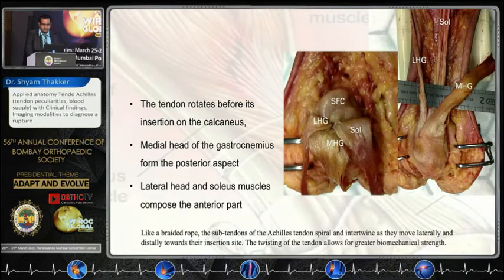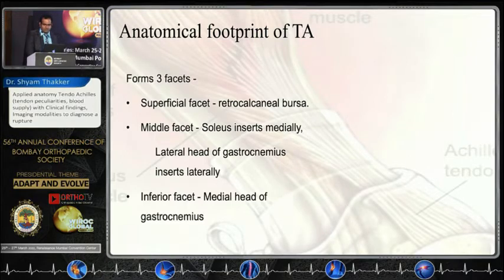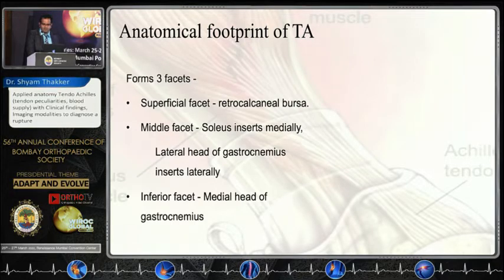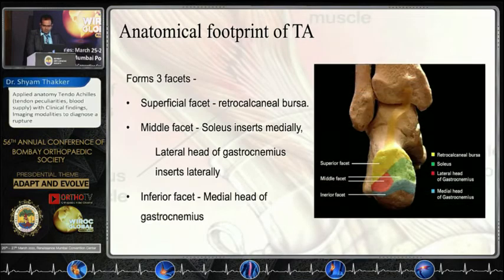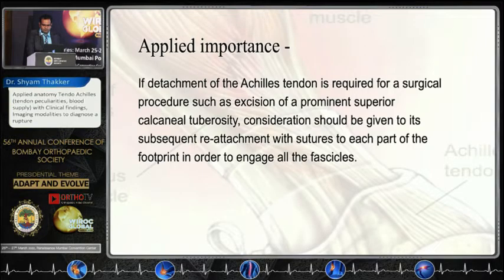This is a specimen where you can appreciate the attachments. Just a short note on the footprint of the Achilles tendon — it forms three aspects: the superficial facet is formed by the retrocalcaneal bursa, the middle is by the soleus and lateral head of gastrocnemius, and the inferior is by the medial head of gastrocnemius. The applied importance is that if we detach the Achilles tendon during surgery, we should take care to reattach all the fascicles as per their facet in order to give proper strength post-surgery.